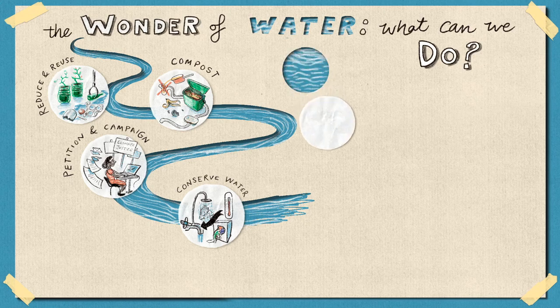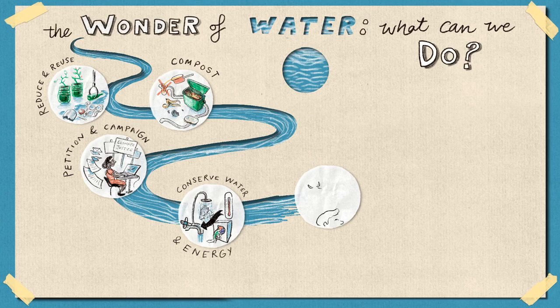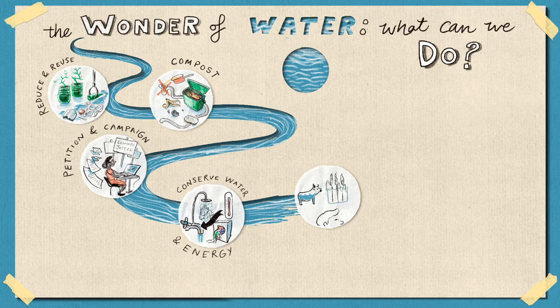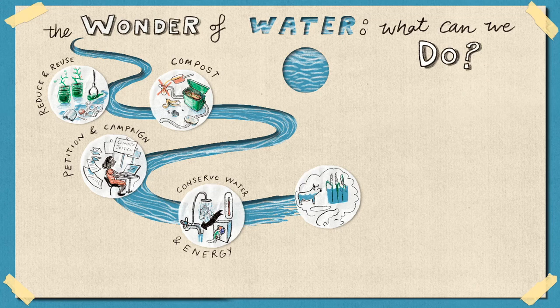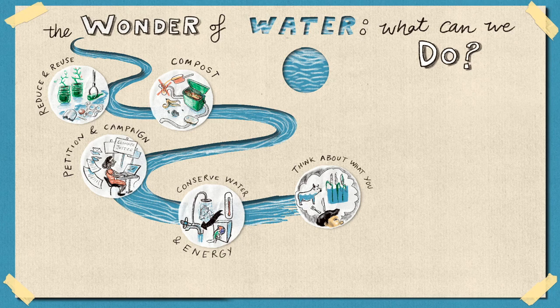We can make sure to turn off taps while brushing our teeth or when they're not in use. And lastly, another thing you can do is to think about what you eat. Some foods like beef and rice require lots of water to produce. Eating these foods occasionally instead of all the time can help us conserve water. Talk to your parents or carers to see if this is possible.